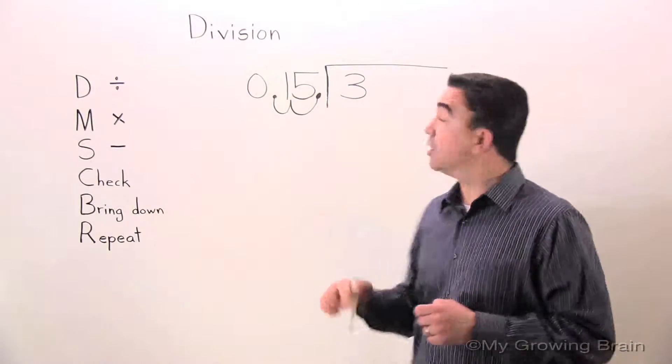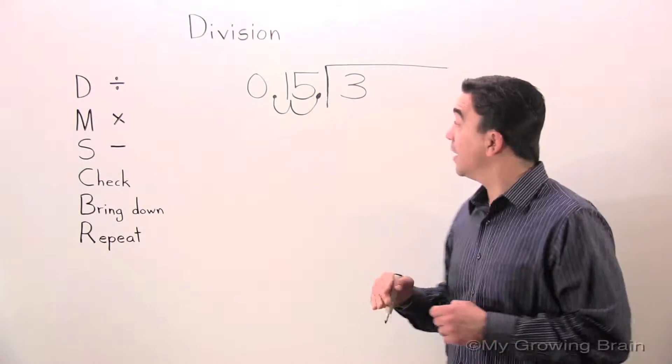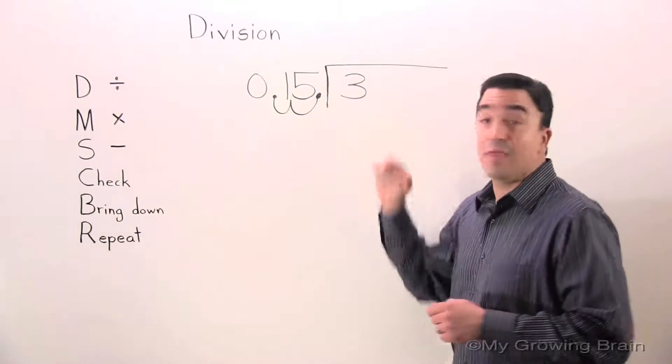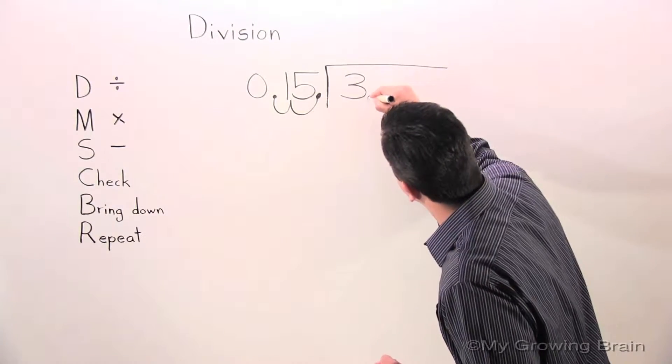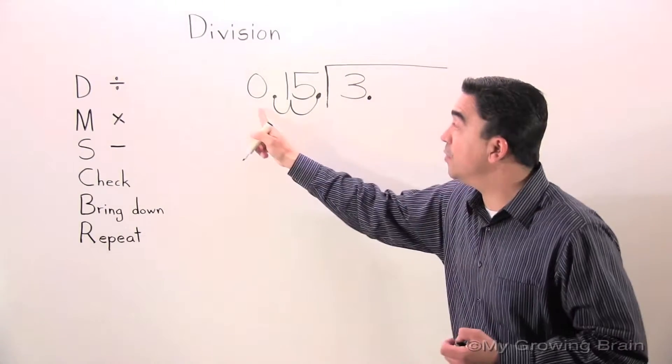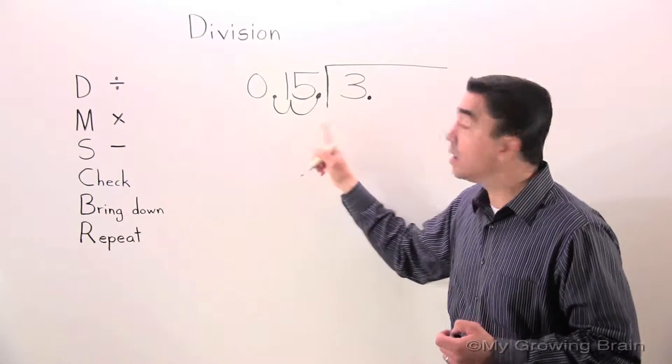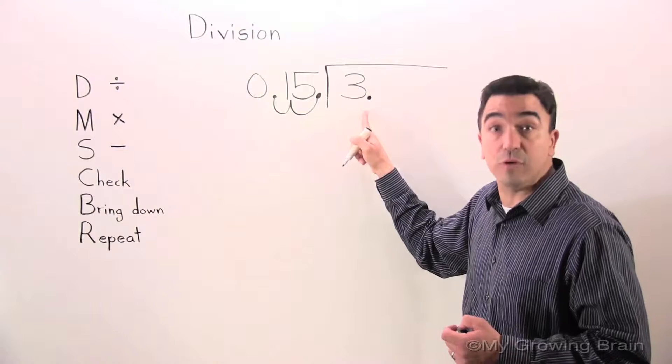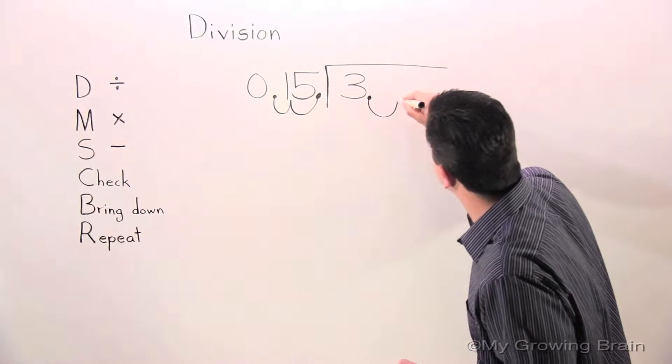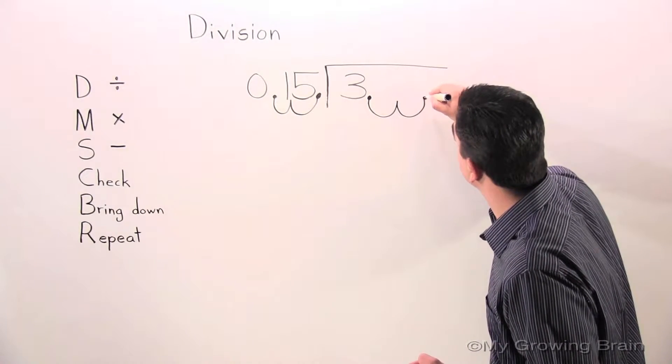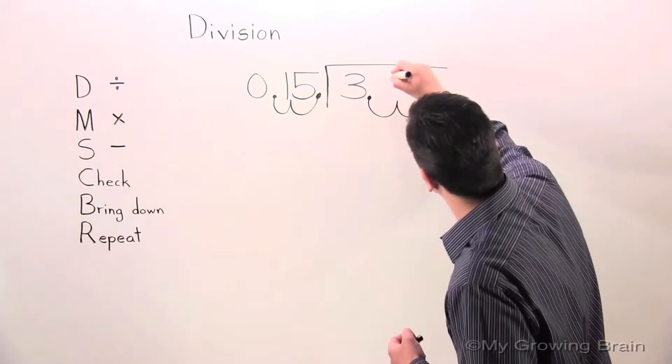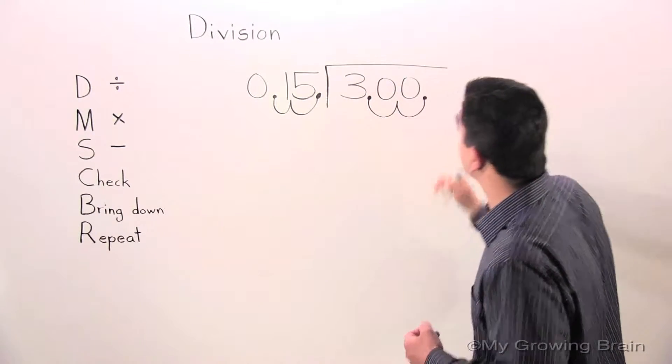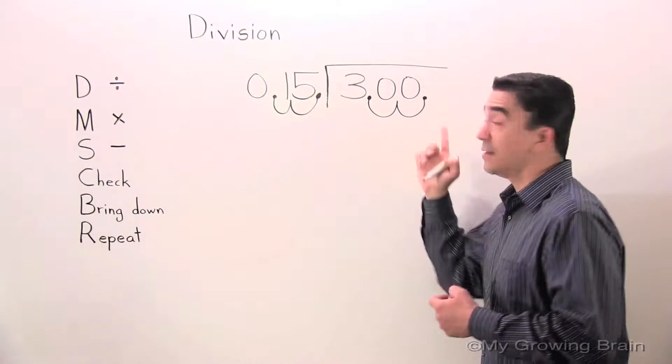Now, whatever I do to the divisor, I have to do to the dividend. However, there's no decimal, so I create one. I moved this two places, so I need to move this decimal two places. I have to add two zeros.